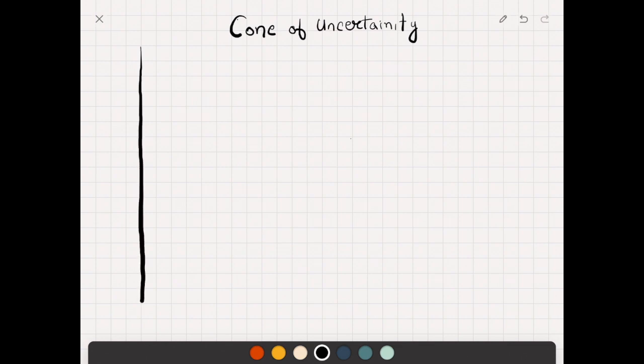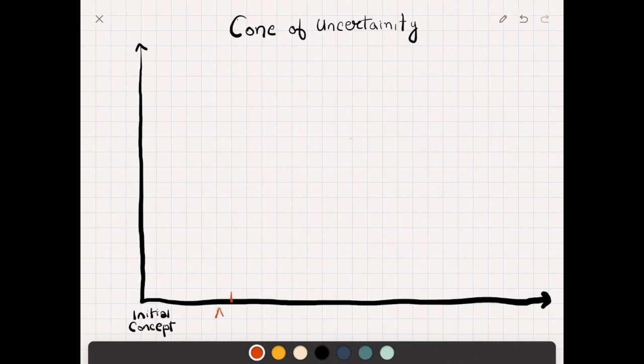So cone of uncertainty is demonstrated by a graph. On the graph, the horizontal axis we have different phases of software. We have initial concept, then we have approved product definition, and after that the requirements are complete, and then the detailed design phase is done.